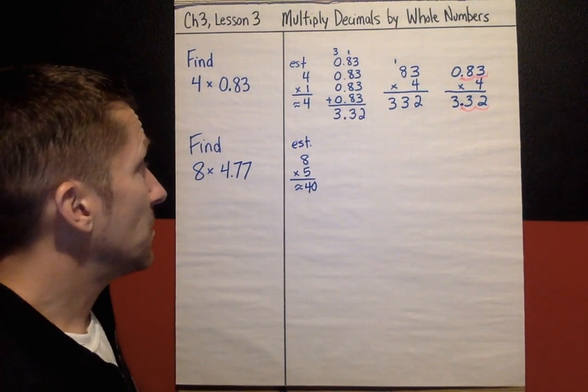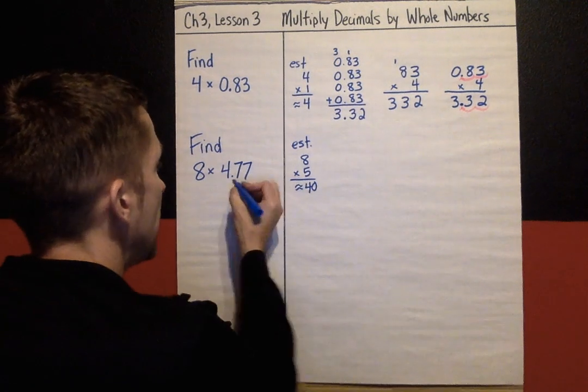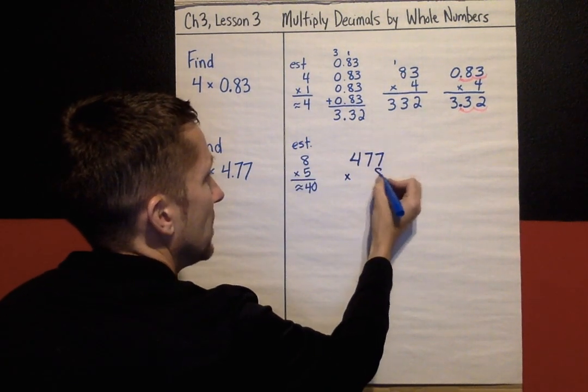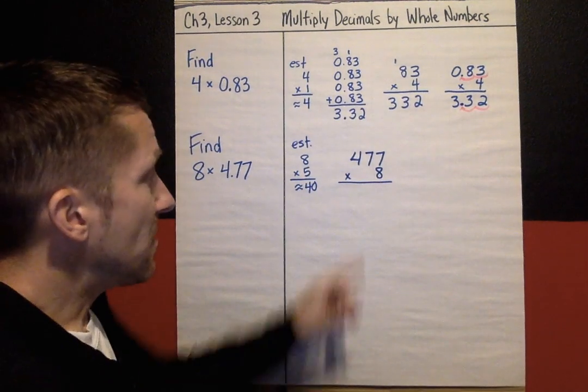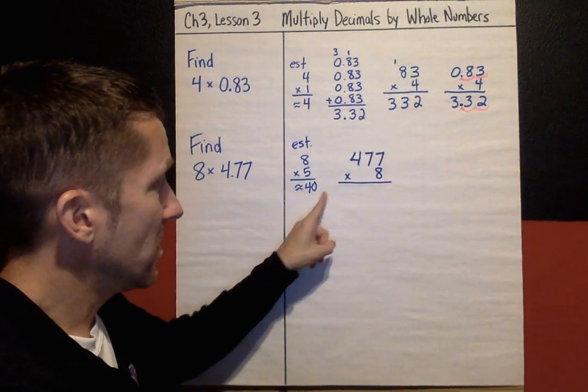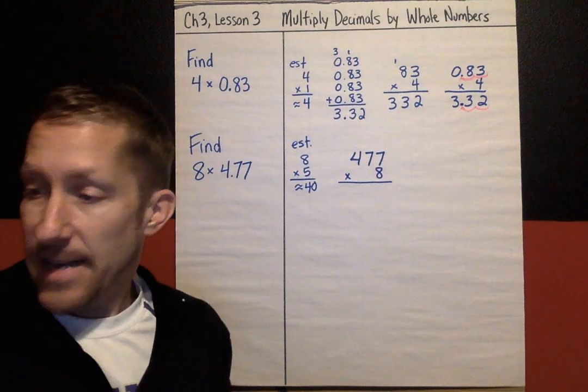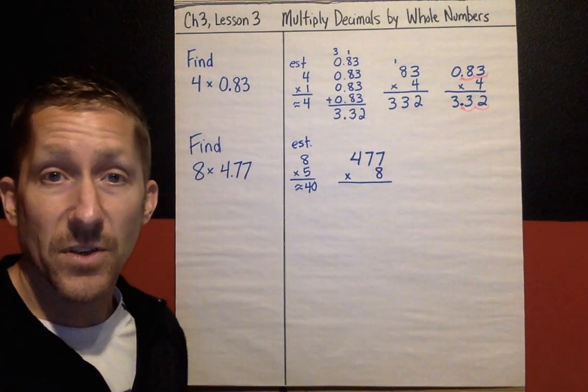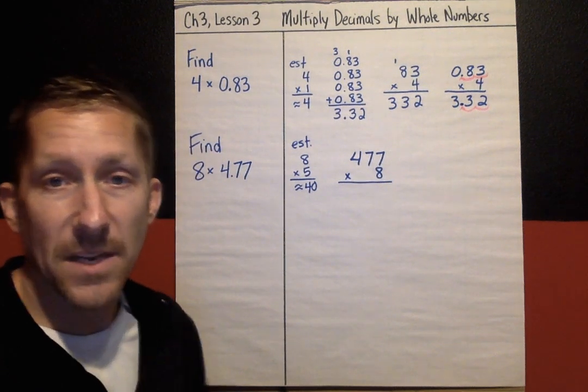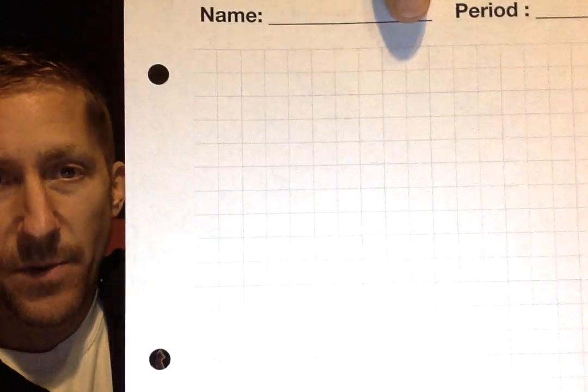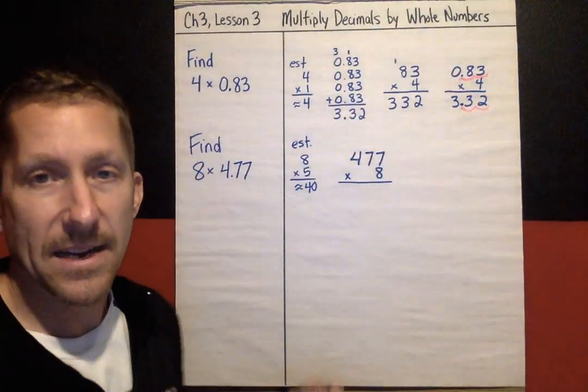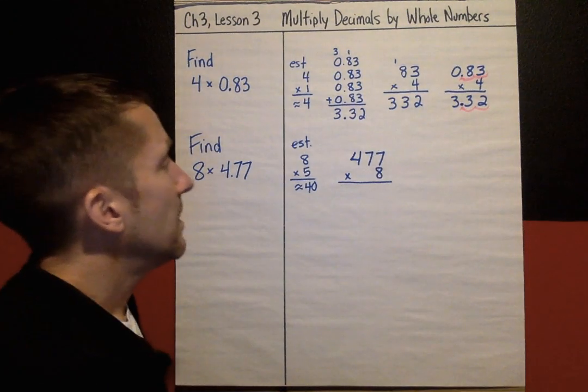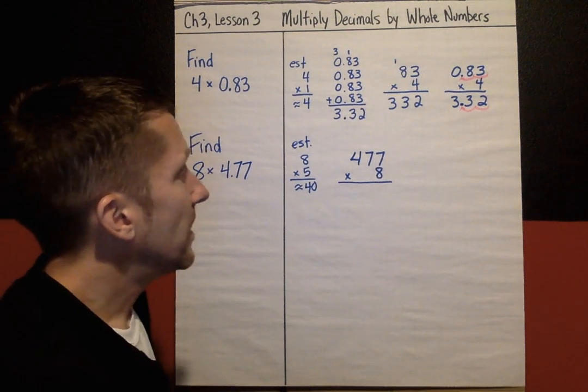So now let's follow the same process we did before. Pretend there's no decimals. So I am going to multiply, pretending that I have 477 times 8. And so now my pattern is 8 times 7, 8 times 7, 8 times 4. By the way, for those of you that like to be organized or getting your numbers in order is a struggle, I recommend showing your work on grid paper. Really nice to keep your numbers lined up. Counting the jumps makes it nice and organized.